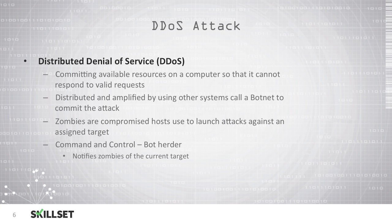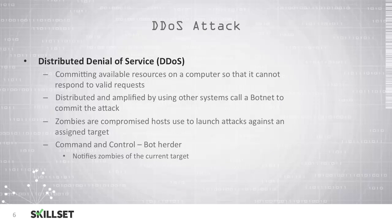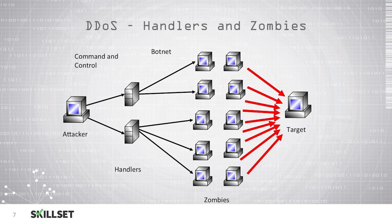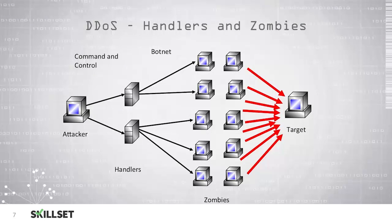With a distributed denial-of-service attack, or DDoS attack, you attempt to consume available resources on a system so that it cannot respond to valid requests from legitimate users. These attacks can be distributed and amplified by many other systems known as a botnet. Zombies are part of the botnet — they are compromised hosts used to launch attacks against a specific target. The bot herder is the command and control center which notifies the zombies of who to attack. Here we can see a command and control system on the left; the attacker notifies the bots or zombies via handlers to attack a specific target. This is much more effective than attacking with a single machine, and we call it distributed because the systems can be in different geographic locations.